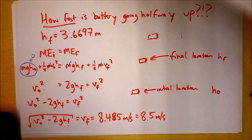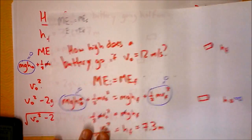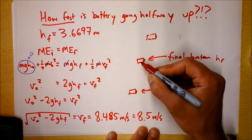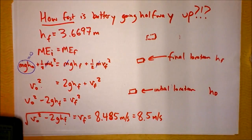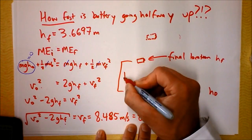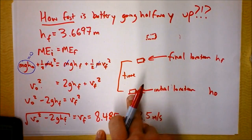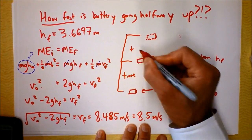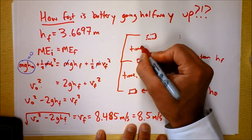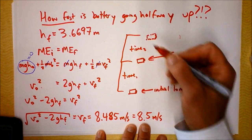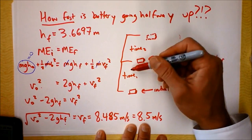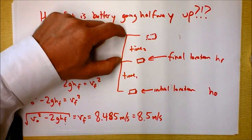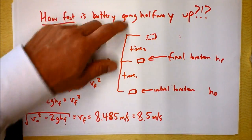So it's going significantly more than half the speed initially. Does this make sense that halfway up we're going more than half the initial speed? I think it does. Compare the time that it takes to get from the initial launch up to halfway, to the time that it takes to get from halfway to the top. These distances are the same, but these times are not the same.